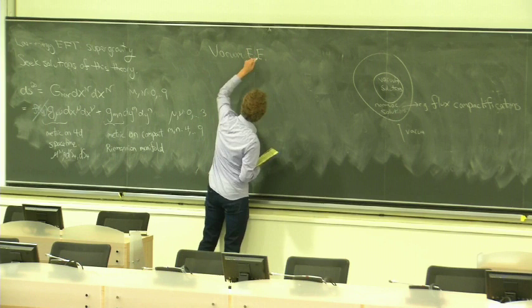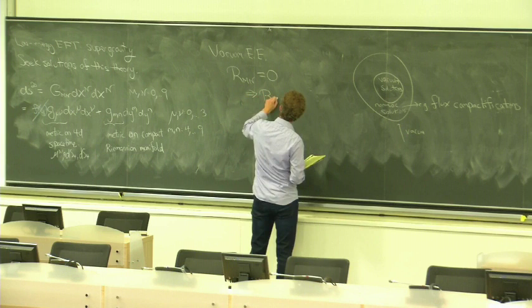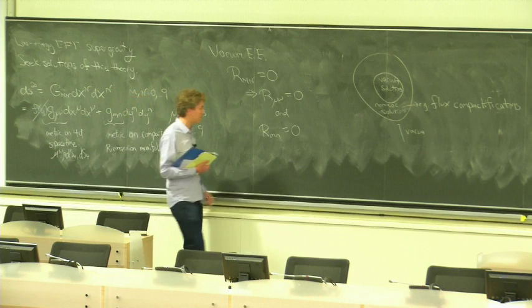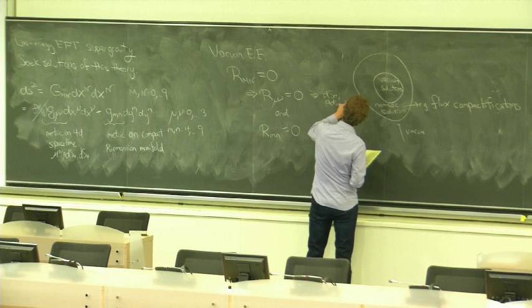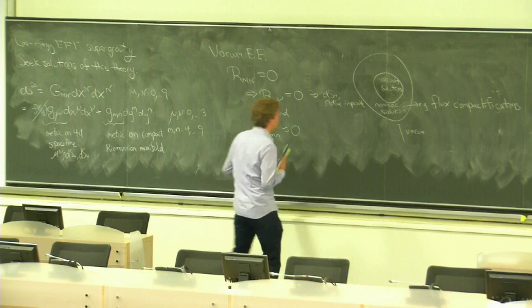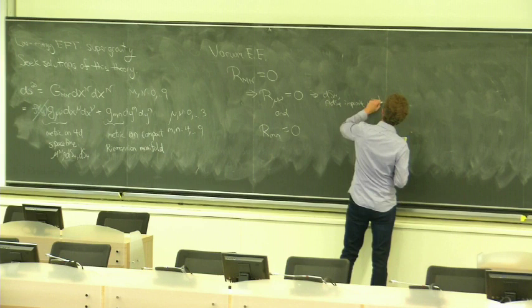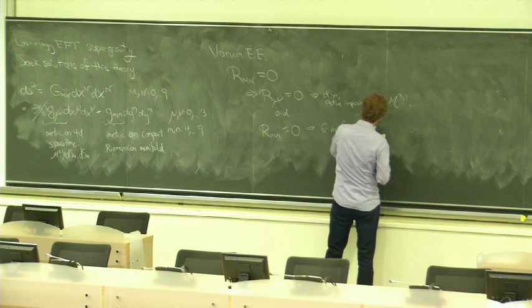So, we're trying to find a solution of the vacuum Einstein equations. And it's easy to write out the vacuum Einstein equations for this ansatz. They read R_{mn} equals zero. Which implies, since we have a product ansatz, that R_{mu nu} equals zero and R_{mn} is equal to zero. Where these are the Ricci tensors constructed from G_{mu nu}, G_{mn}, respectively. Well, R_{mu nu} equals zero implies that de Sitter and anti-de Sitter are impossible. And our only possibility is Minkowski space.